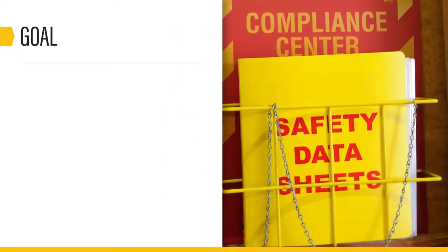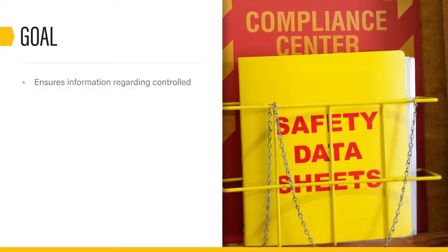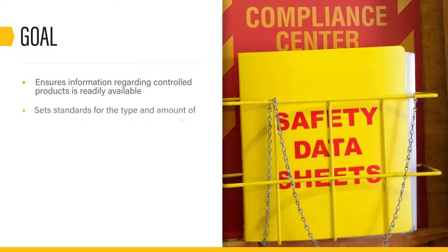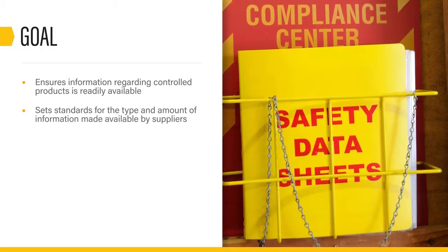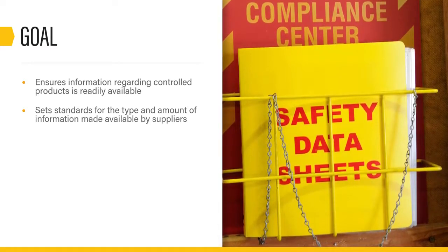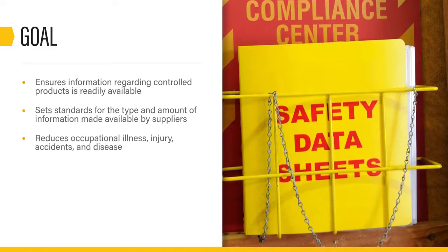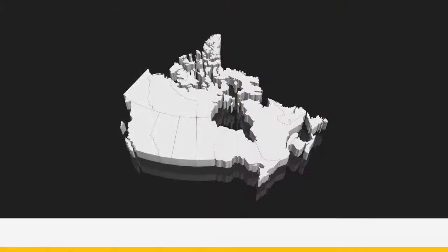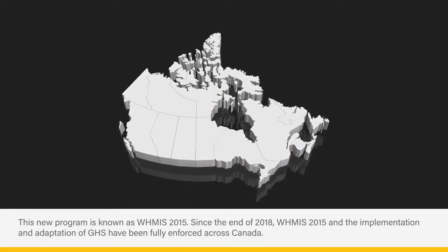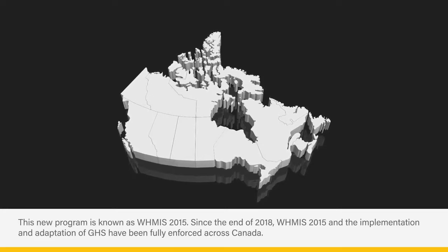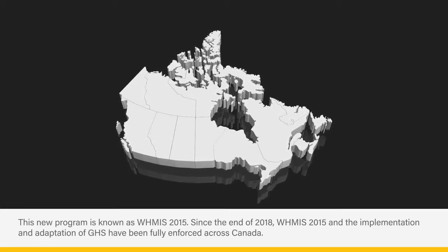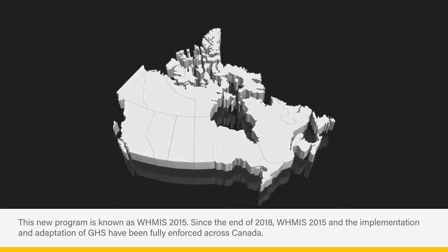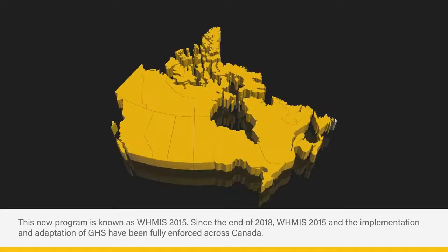The goal was to create a program that ensures information regarding controlled products is readily available, sets standards for the type and amount of information made available by suppliers, and reduces occupational illness, injury, accidents, and disease. This new program is known as WHMIS 2015. Since the end of 2018, WHMIS 2015 and the implementation and adaptation of GHS have been fully enforced across Canada.